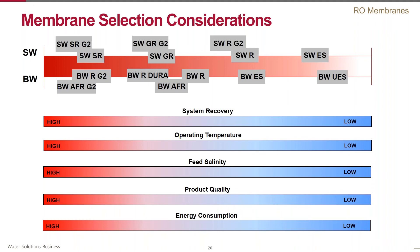For brackish water applications the choice is even wider. In addition to high rejection R and RG2 membranes, we offer the ultra-durable Dura membrane and anti-fouling AFR membranes for challenging waters. If you have any questions regarding the choice of a particular membrane for your application, do not hesitate to contact us.